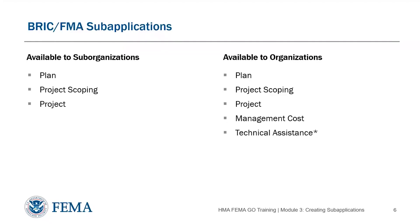Available only to organizations are management costs of applications, where organizations can apply for funds to cover indirect costs and administrative expenses that occur when administering an award and the associated sub-awards. Sub-organizations, on the other hand, can list management costs as a line item in the budget section of their sub-application according to the Notice of Funding Opportunity. There is also a technical assistance sub-application, which is only available to grant recipients in the Flood Mitigation Assistance Program for entities that have received a Flood Mitigation Assistance award in the past over a certain dollar amount according to the Notice of Funding Opportunity.